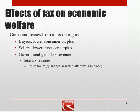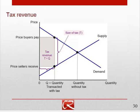Remember that the tax is going to reduce the quantity transacted somewhat. Graphically, we can see that tax revenue is going to be this box here, where the width of the box is equal to the quantity transacted with the tax, and the height of the box is equal to the tax per transaction.